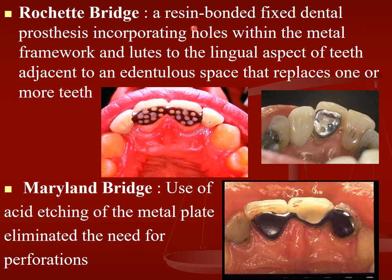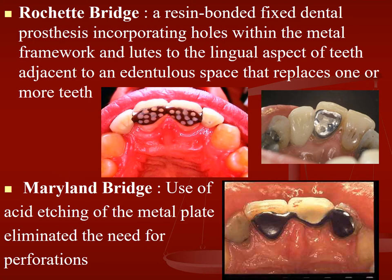Rochette's bridge is a resin-bonded fixed dental prosthesis incorporating holes within the metal framework and luted to the lingual aspect of teeth adjacent to an edentulous space, replacing one or more teeth. The Maryland bridge uses acid etching of the metal plate, which eliminated the need for perforation — a metal plate is acid etched, cement is placed, and it is used as a Maryland bridge.